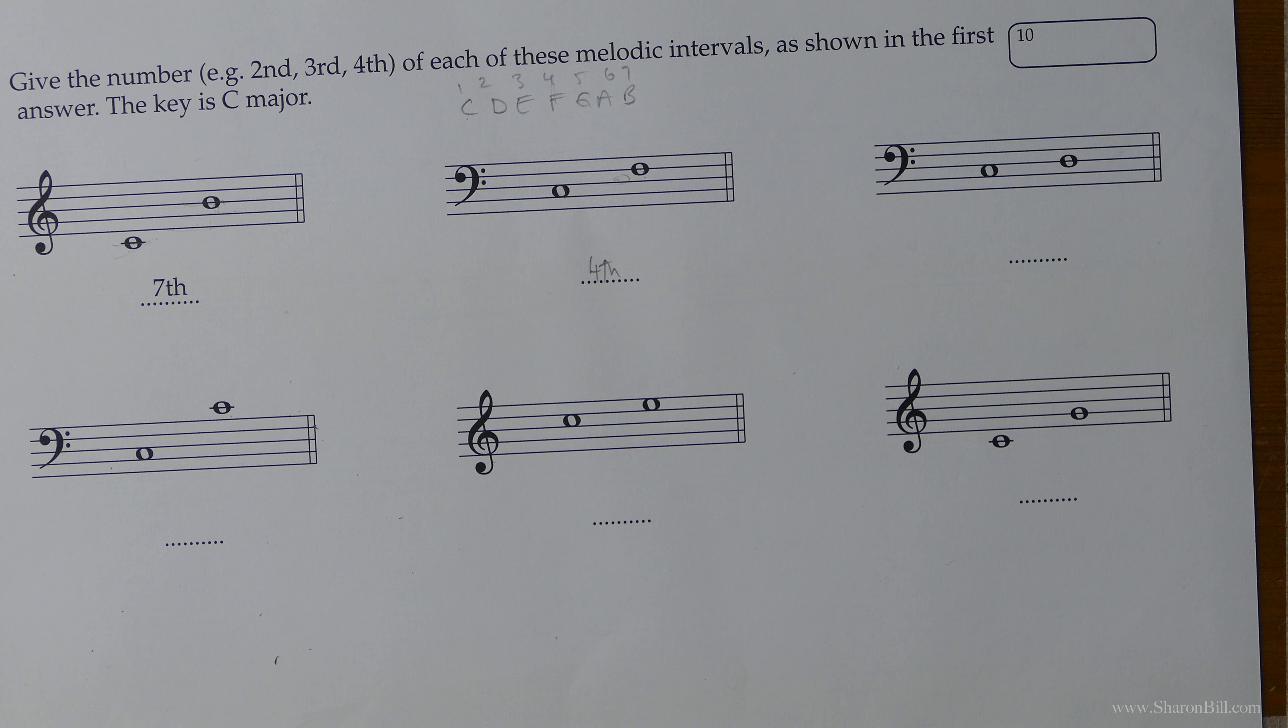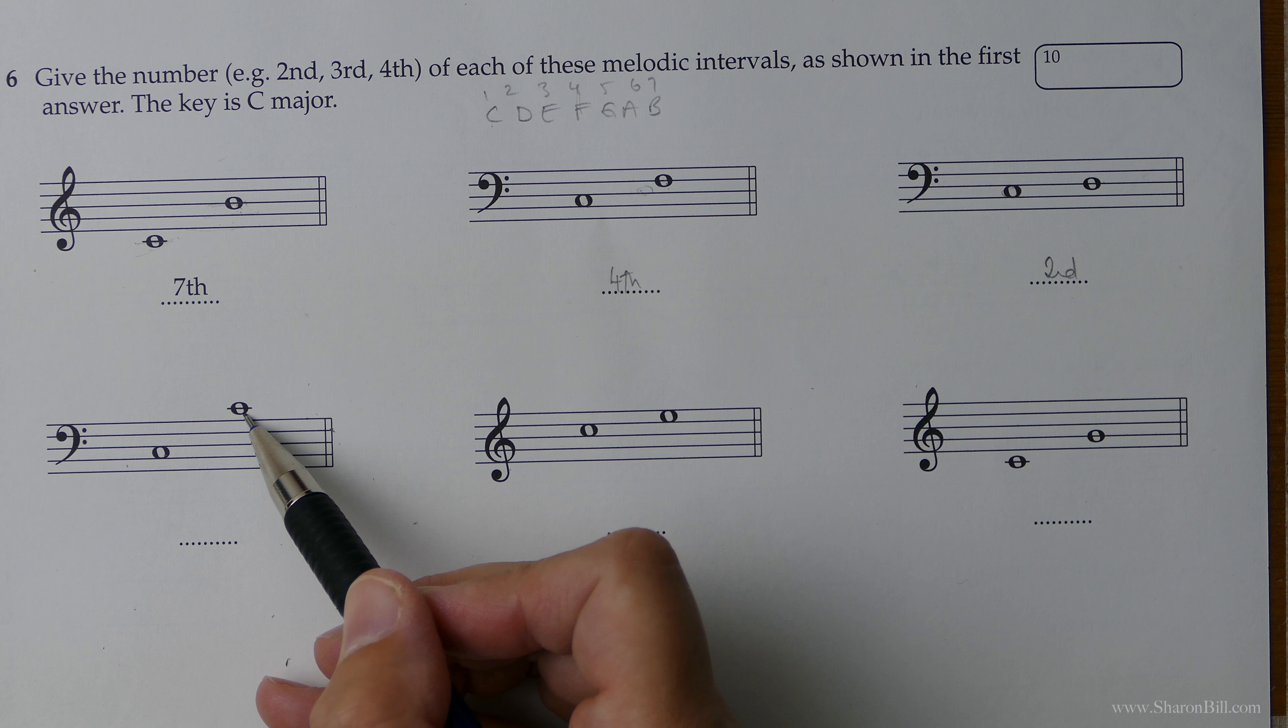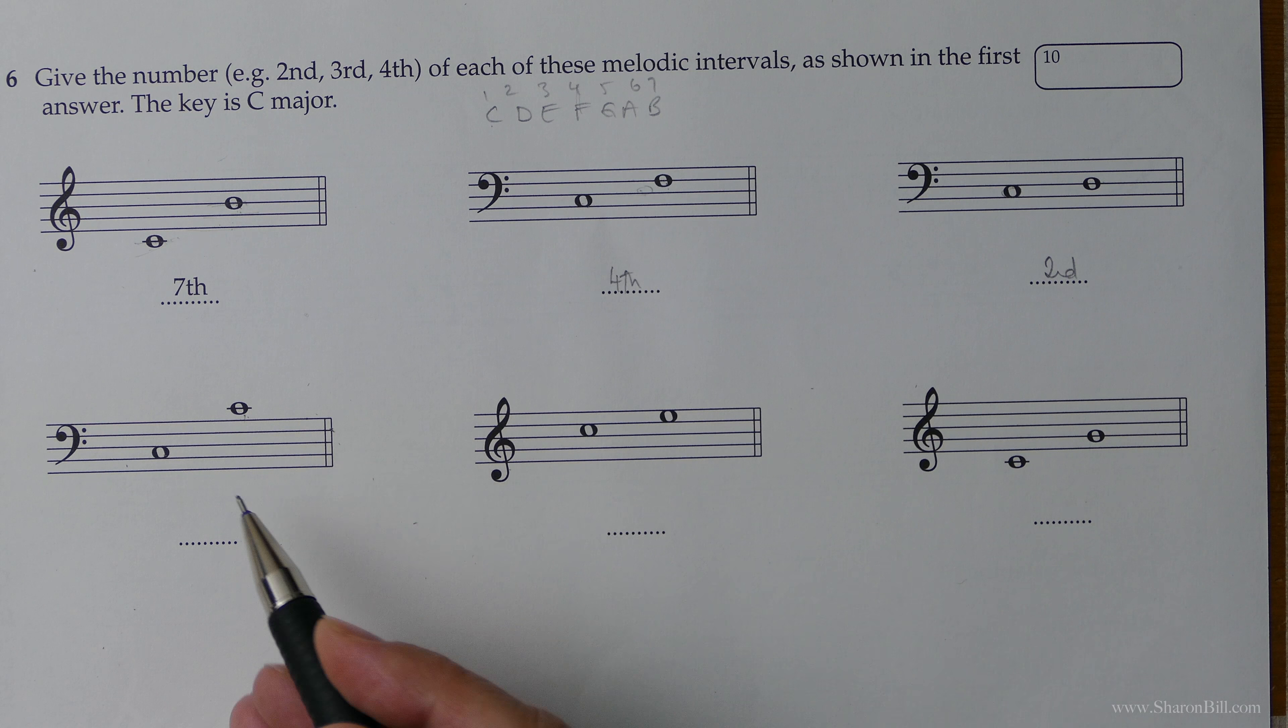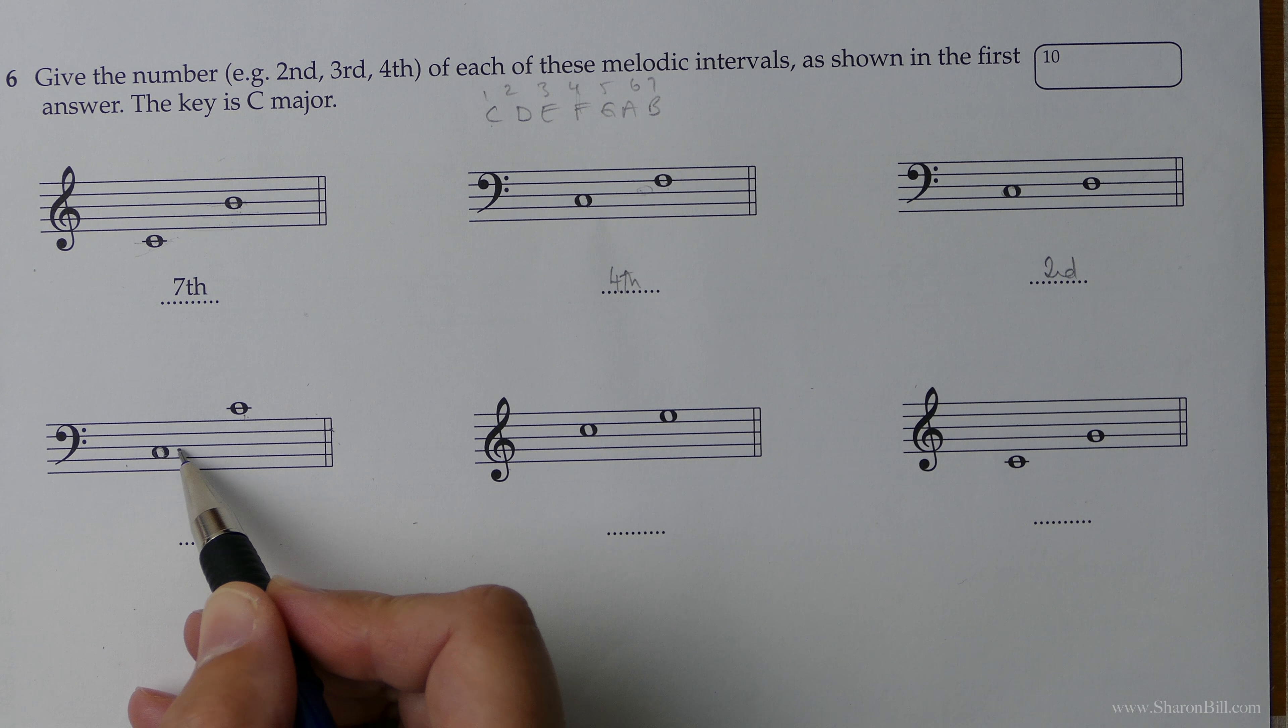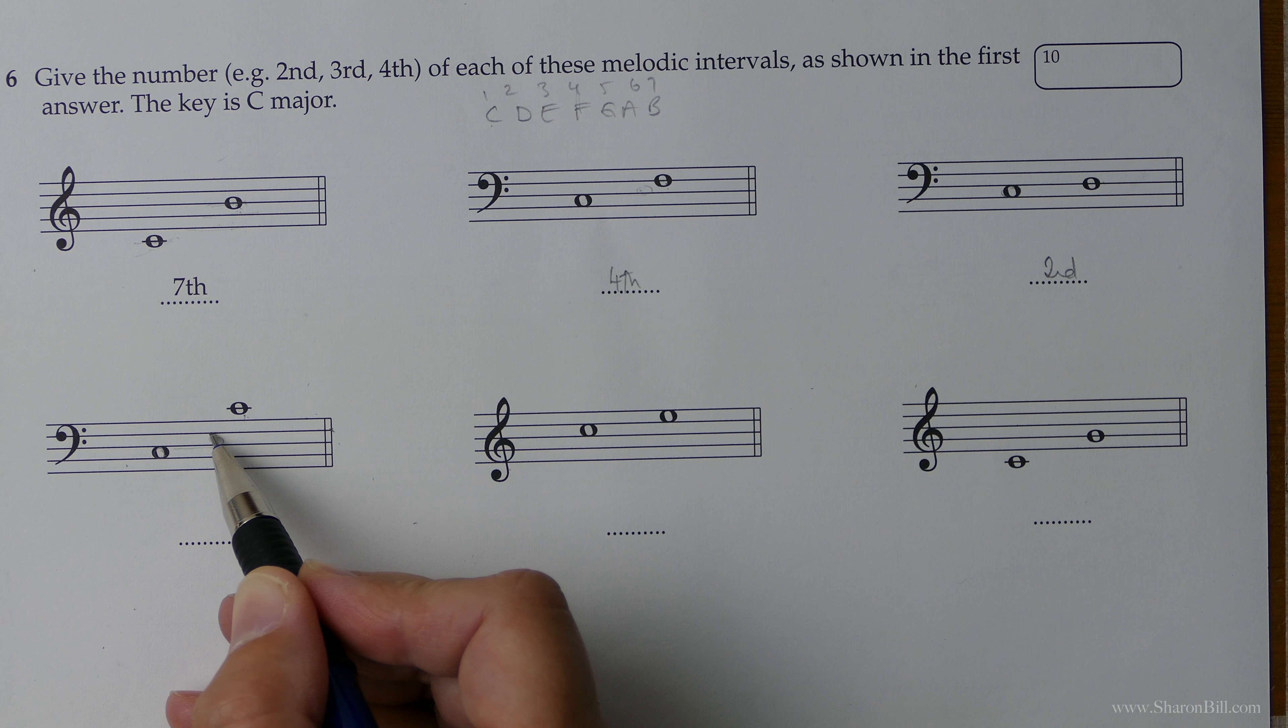But really all you need to do is just count up the ladder system of this stave of the lines and spaces in step. So here we've got the C and then next door to each one, two, a second. Next door step away is a second.